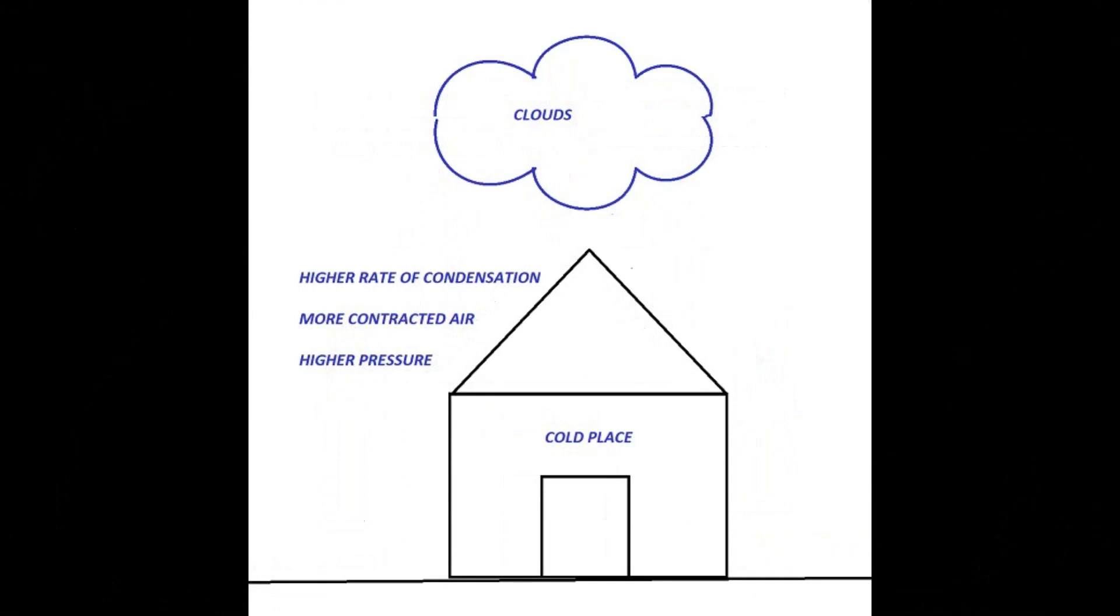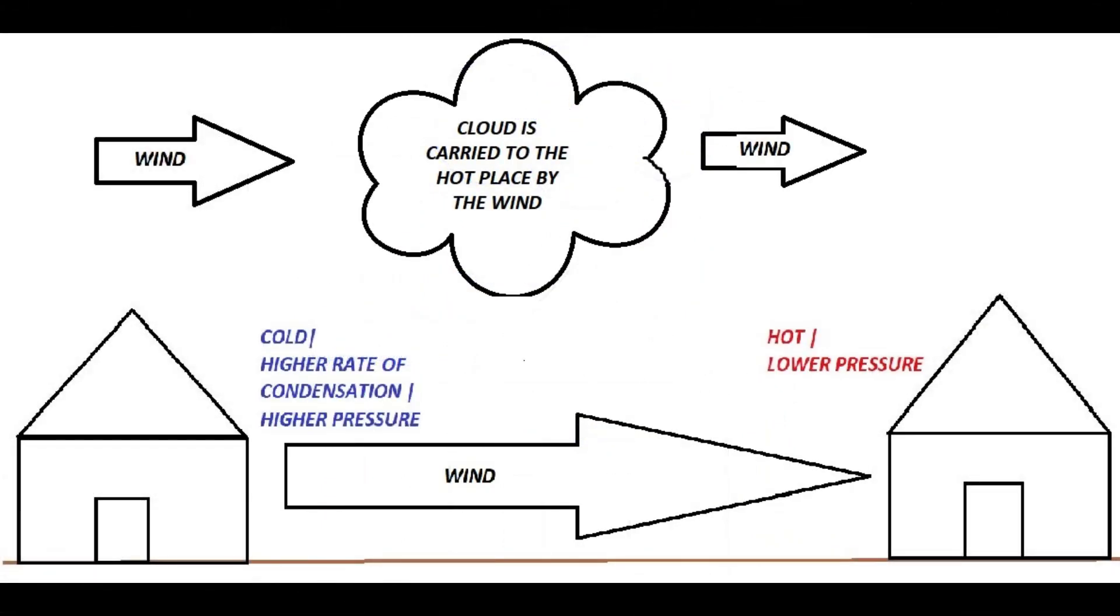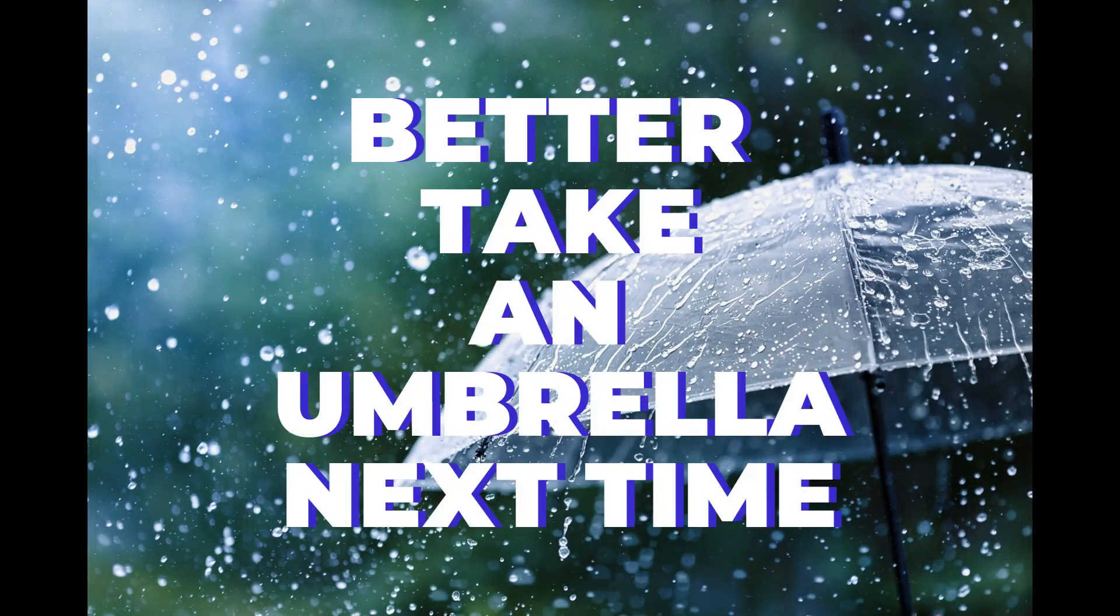The colder region on the other hand has a higher pressure, and as we know that the higher pressure wants to go to the lower pressure, the wind blows from the colder region to the hotter region bringing the clouds from the colder region to your place. And these clouds may bring you rain.